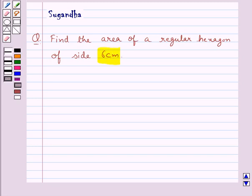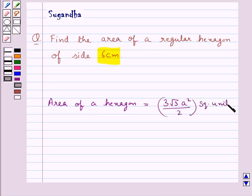Before moving on to the solution, let's recall the formula for the area of a hexagon, which is equal to 3 root 3 a square upon 2 square units, where a is the length of the side of hexagon.